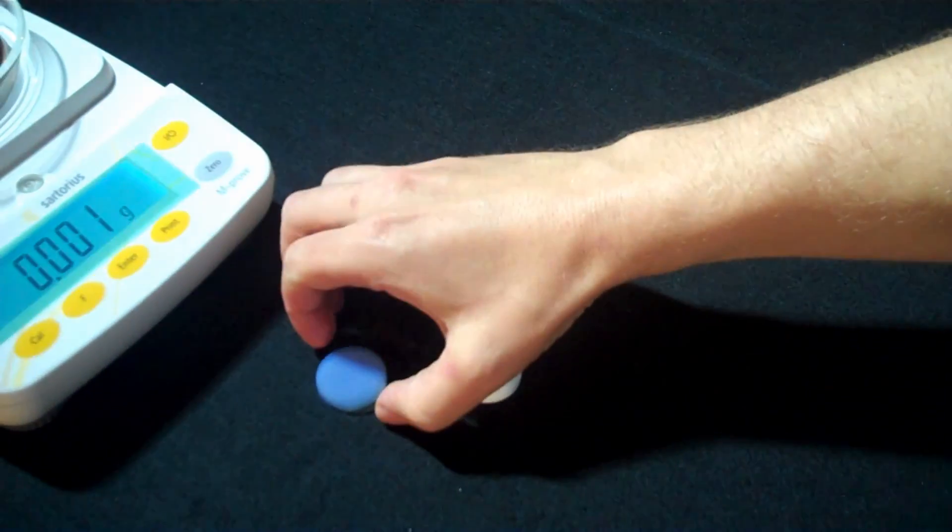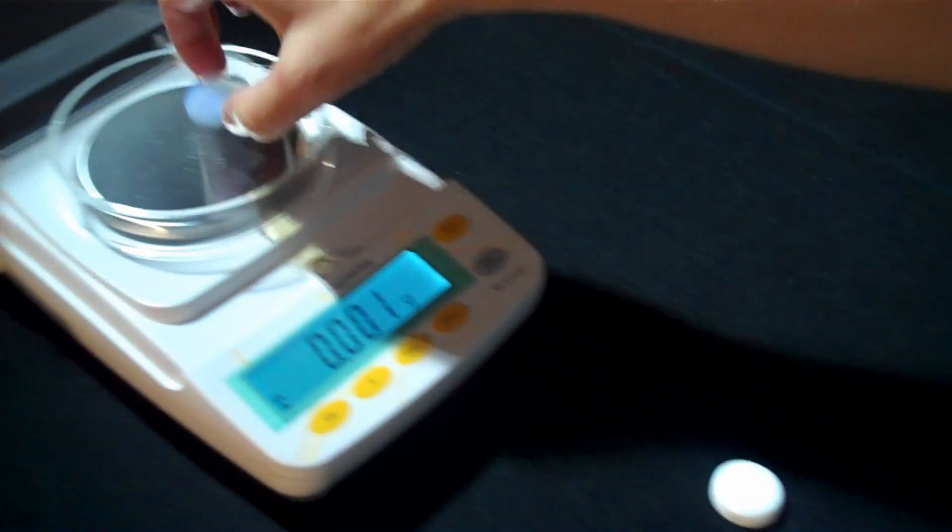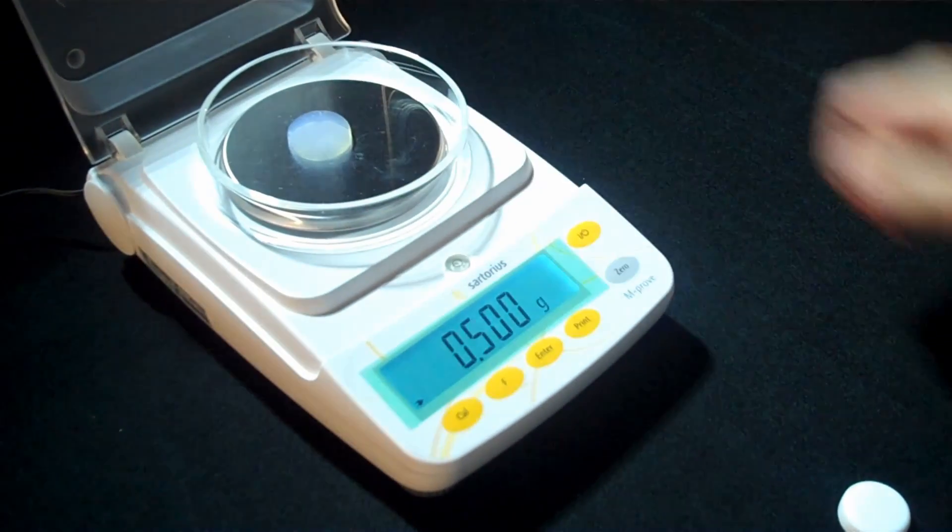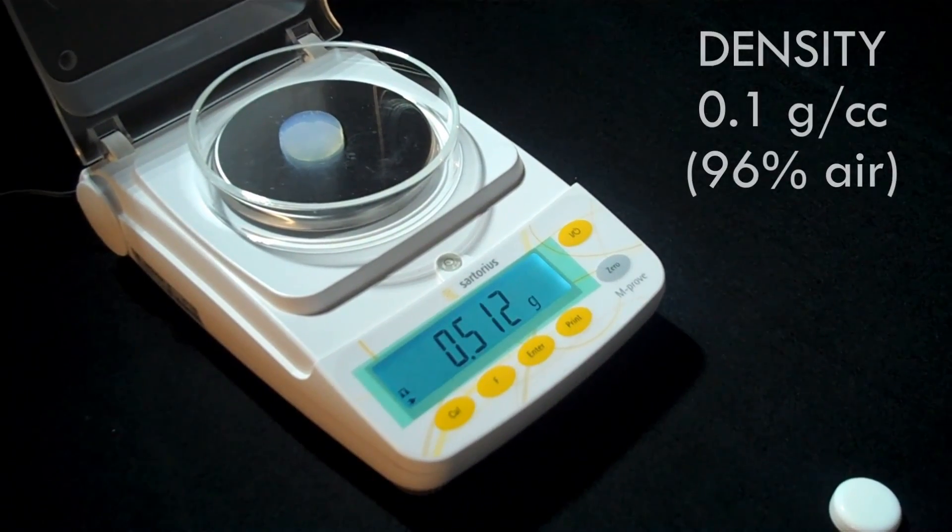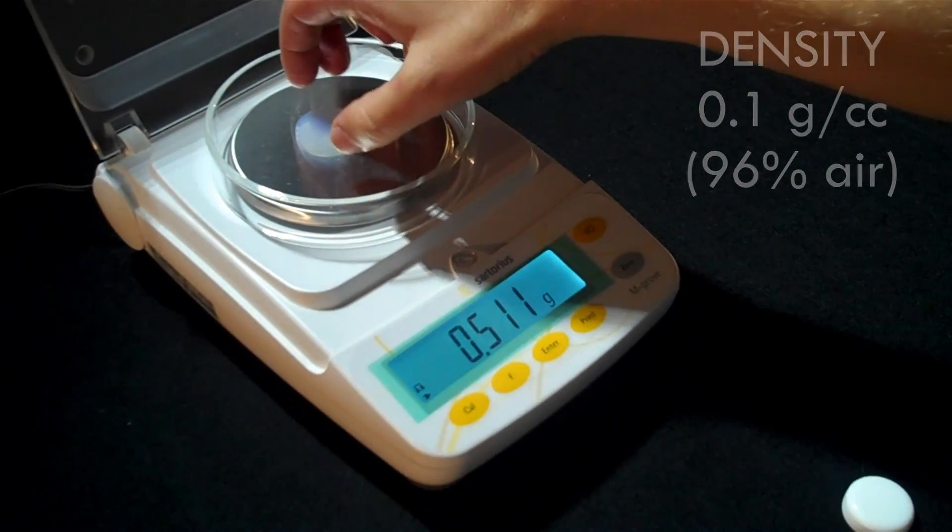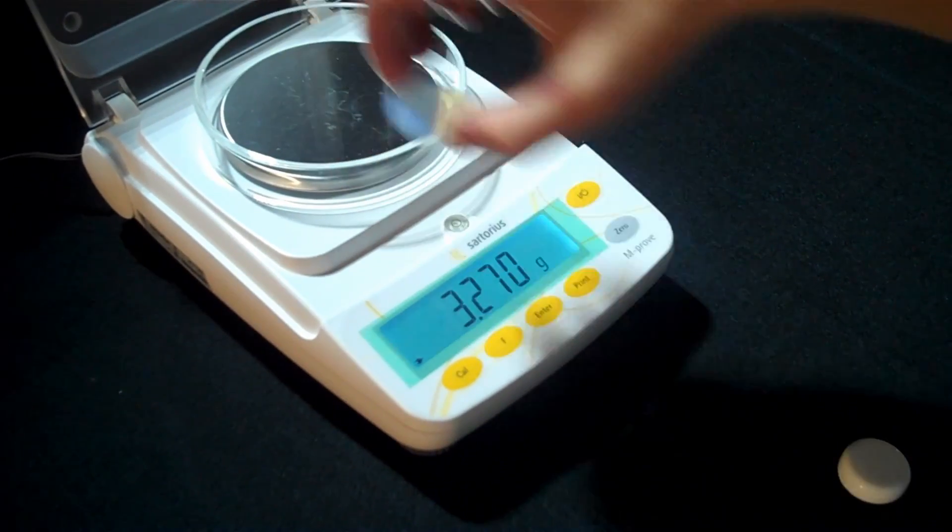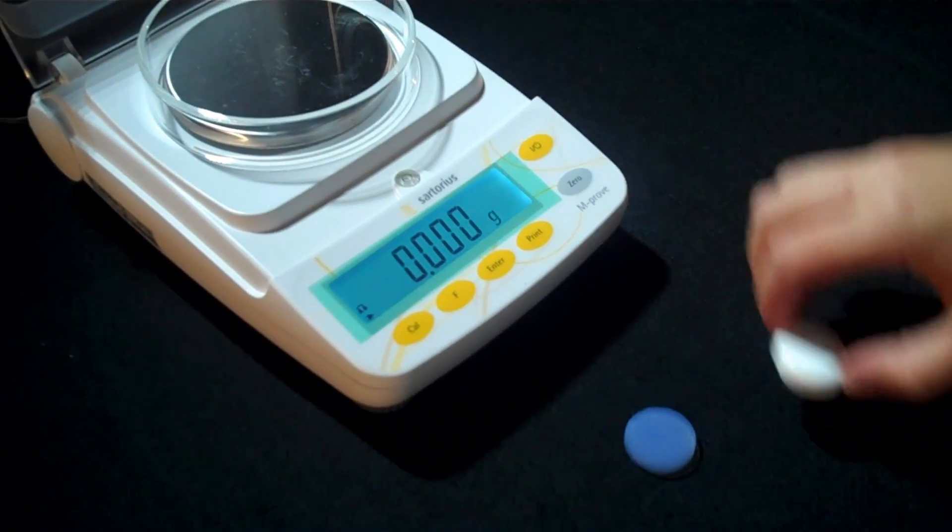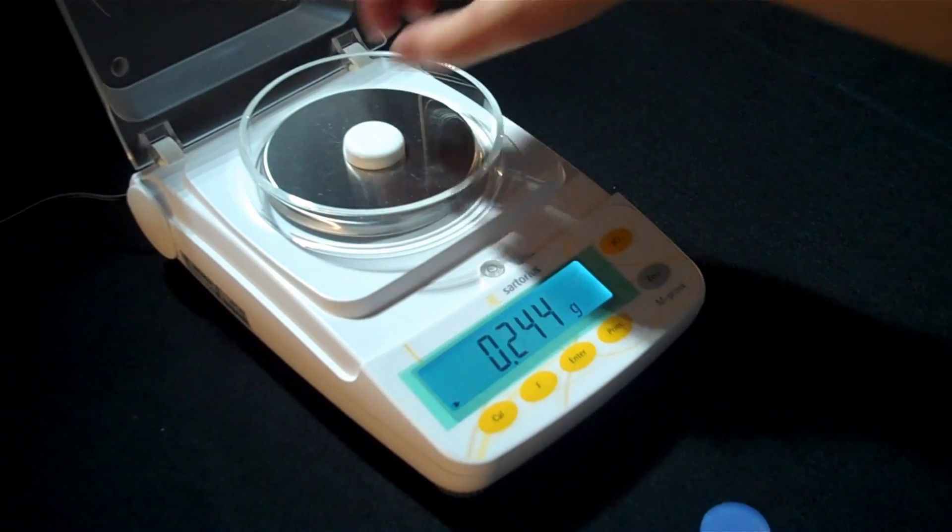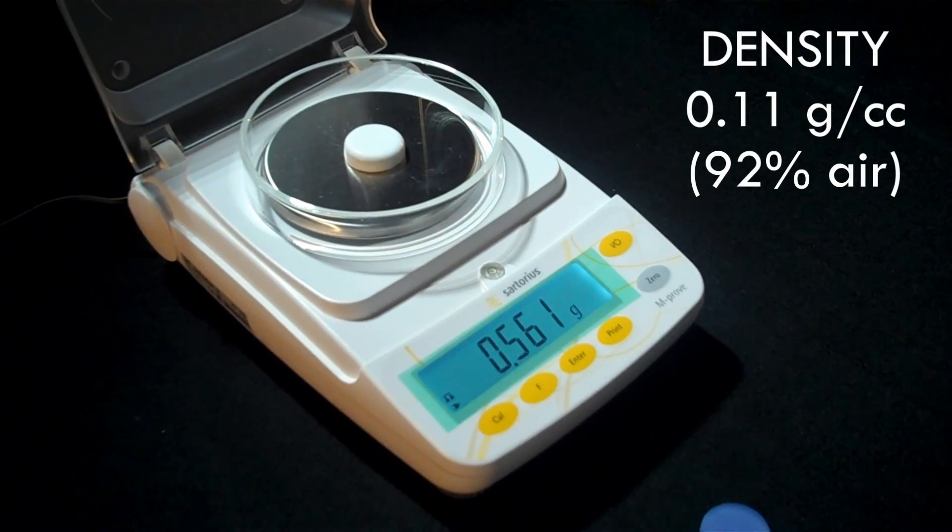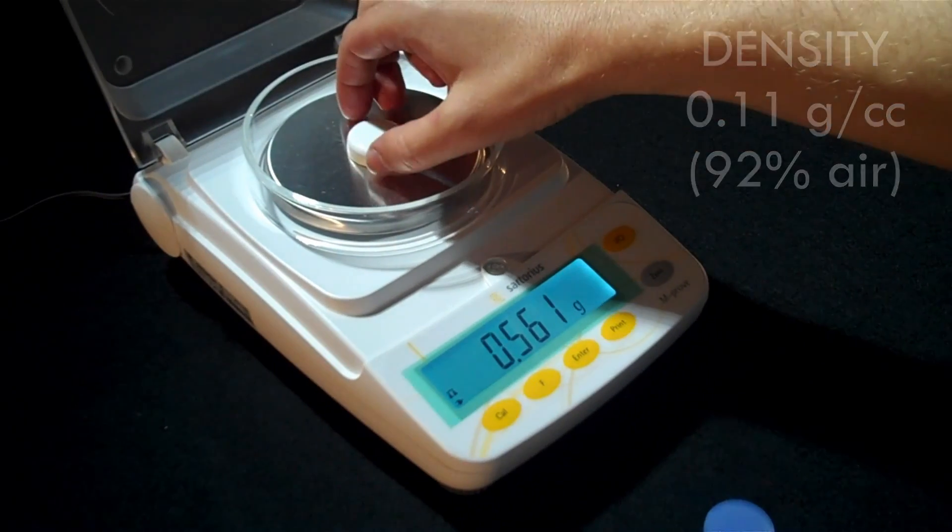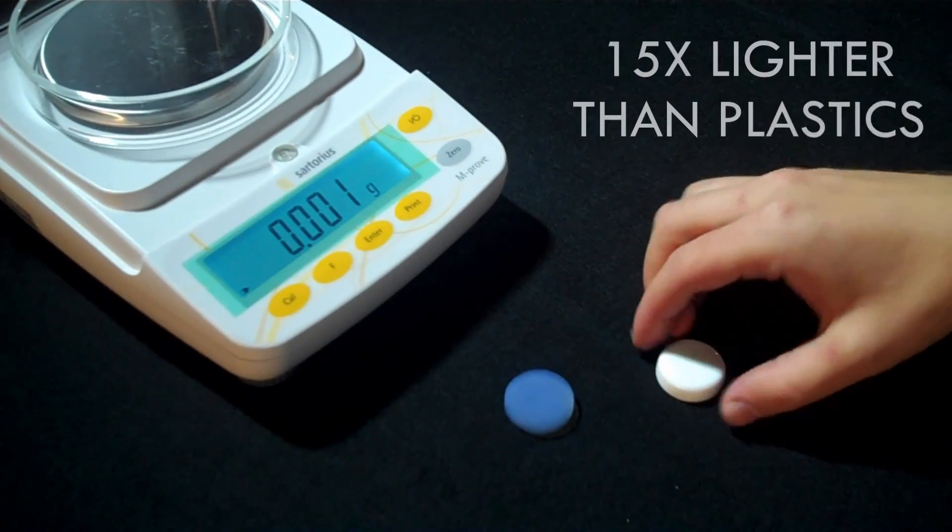When I weigh the silica aerogel disc, you'll see that its mass is about half a gram, which means that its density works out to be about 100 milligrams per cubic centimeter. And when I weigh the airloy, we see that its mass is also about half a gram, which means that it has the same density as the aerogel, about 100 milligrams per cubic centimeter.